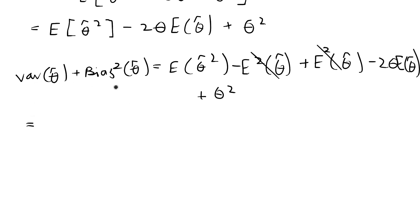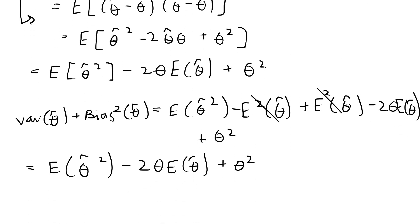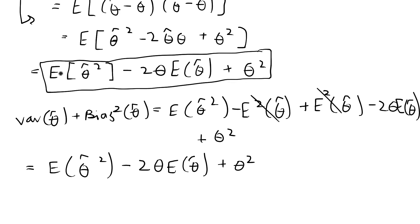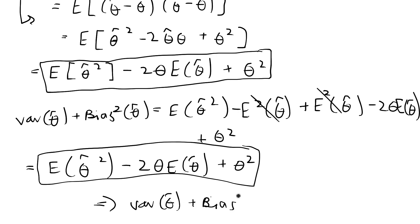So the variance of theta hat plus the bias squared of theta hat equals the expected value of theta hat squared minus 2 theta times the expected value of theta hat plus theta squared. Going back to how we defined the mean squared error, that was also equal to the expected value of theta hat squared minus 2 theta expected value of theta hat plus theta squared. Because these two expressions are equal to each other, the variance of theta hat plus the bias squared of theta hat equals the mean squared error of theta hat. And we are done with this problem.